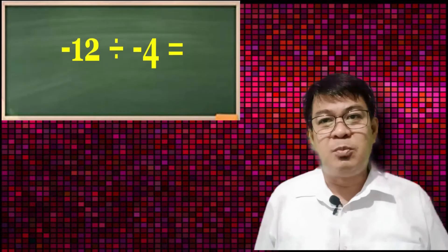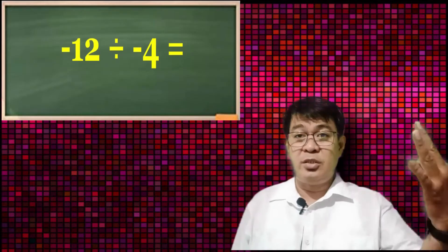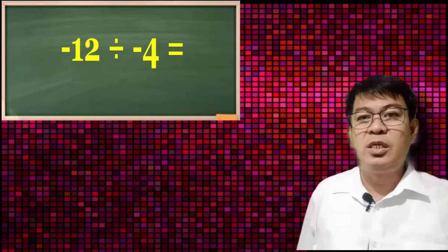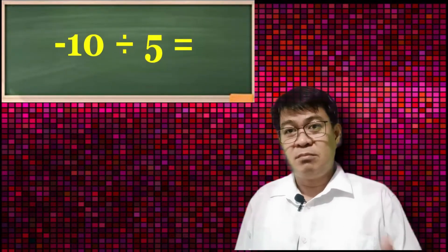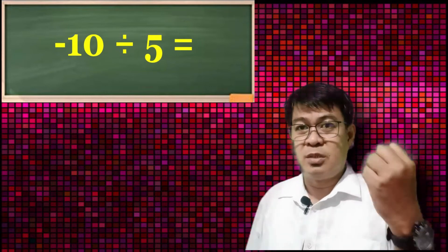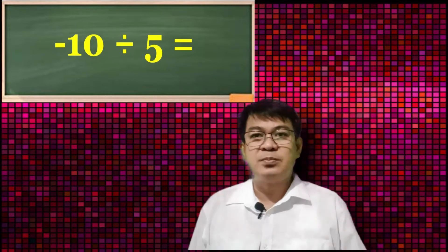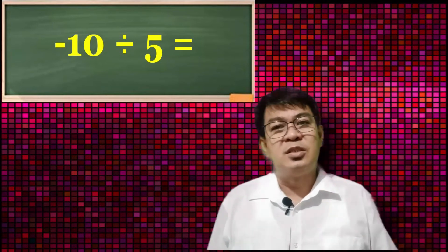Let's proceed with division exercises. I'll flash the problem on screen and you answer mentally or write it on your paper. First one: negative 12 divided by negative 4. Time's up. Very good — positive 3. Next: negative 10 divided by positive 5. Negative and positive. The answer is negative 2.